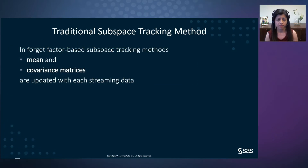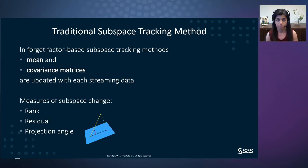A traditional subspace tracking method for streaming data is a power method based on forgetting factors. In this method, two forgetting factors are considered — one for the mean and the other for the covariance matrix — so that higher weights are given to more recent observations. With each streaming data point, the mean and covariance matrix get updated based on these forgetting factors. However, setting the forgetting factors is not trivial. Traditionally, three measures from each computed subspace are used to track change: rank, residual (which is reconstruction error), and the projection angle — the angle between the new observation and the subspace spanned by current observations.